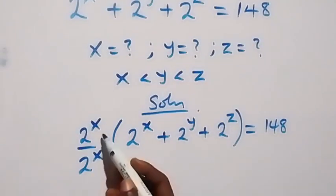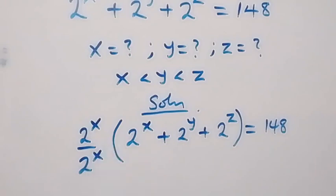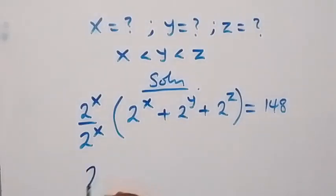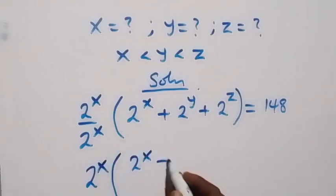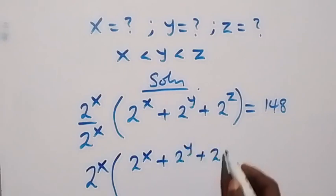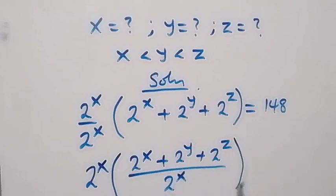What we have done here: 2 raised to power x over 2 raised to power x is like it's 1 there. Then we can write this as 2 raised to power x out and use this to divide here and have 2 raised to power x plus 2 raised to power y plus 2 raised to power z, over 2 raised to power x, then equals to 148.